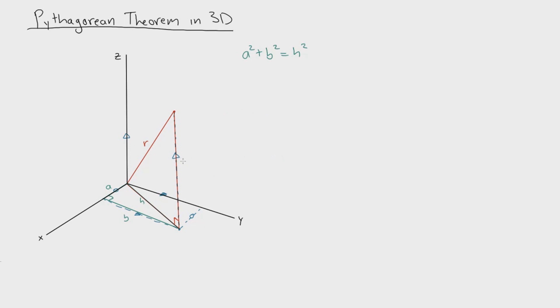So I'm going to call this vertical length that's going in the z direction, c. And now we can just apply the Pythagorean theorem to this right triangle. So we can say that c squared plus h squared equals r squared.